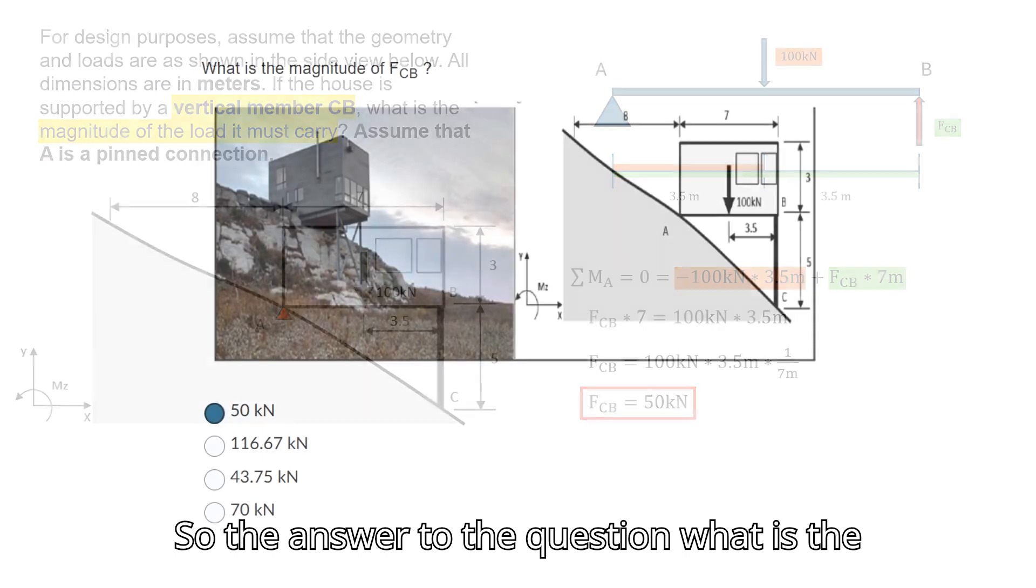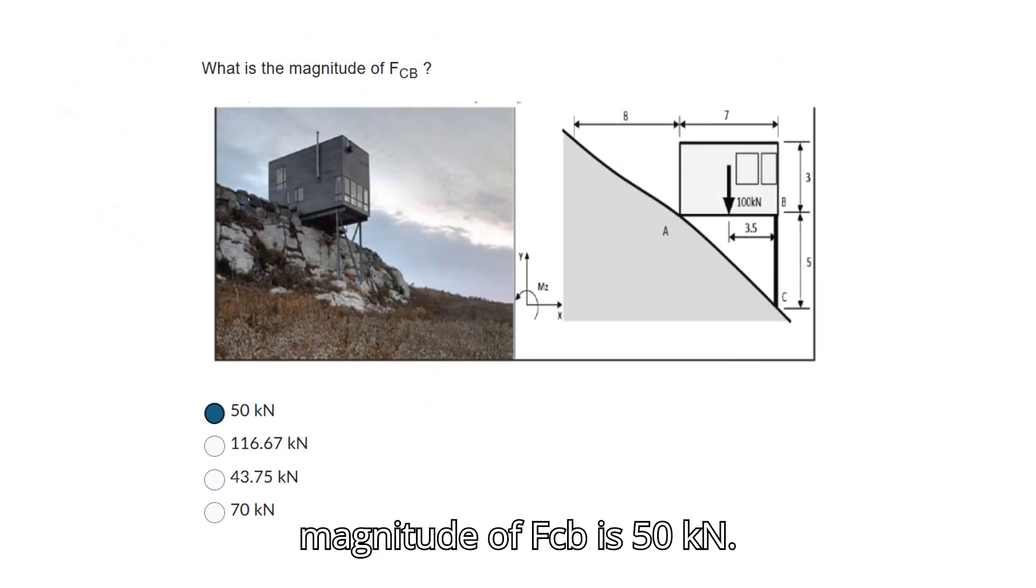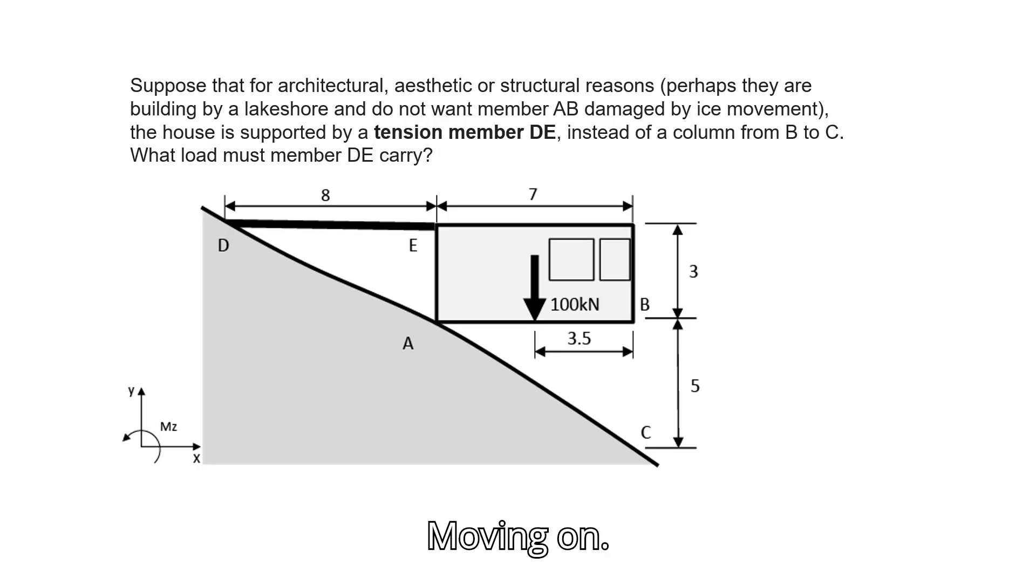So the answer to the question—what is the magnitude of FCB—is 50 kN. Moving on.